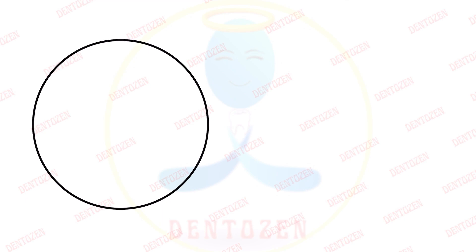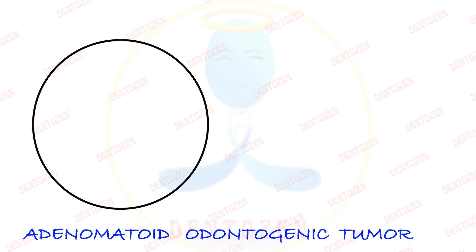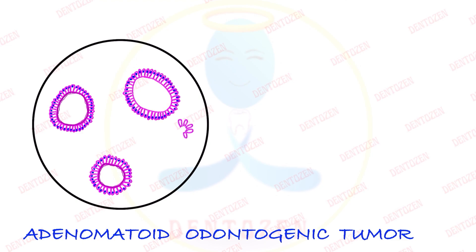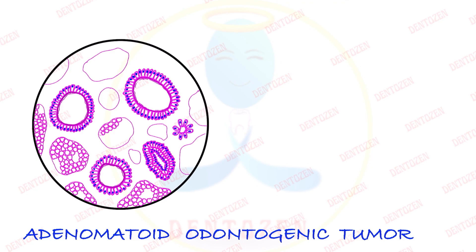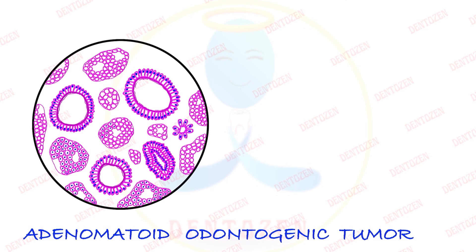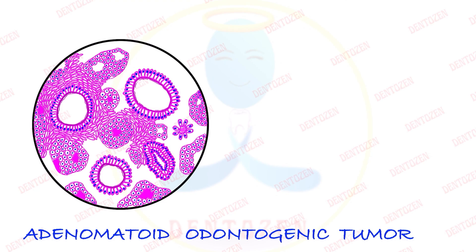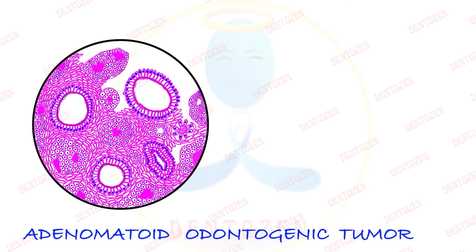Now let's see how we are going to fill all these things in the circle. Cells are the main component, so a large part of the circle will be filled with cells. We draw the duct-like structures lined by columnar cells, with the inside lined by a pink hyaline ring. Then we draw the rosette pattern and the convoluted pattern. After that, we draw areas filled with polyhedral cells, leaving some space to fill in the pink amyloid-like material. Then we fill in spindle cells in the spaces between all these areas, filling the nuclei of all cells as we go.